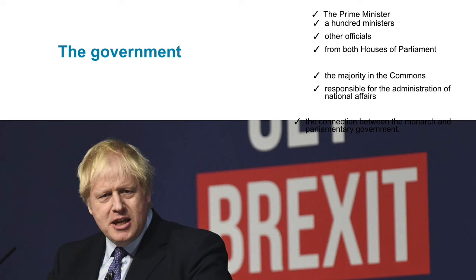The Prime Minister usually sits in the Commons, as do most of the ministers, where they may all be questioned and are held accountable for government actions and decisions. The Prime Minister has historically been the connection between the monarch and parliamentary government. This convention continues today in the weekly audience with the monarch, at which the policies and business of the government are discussed.